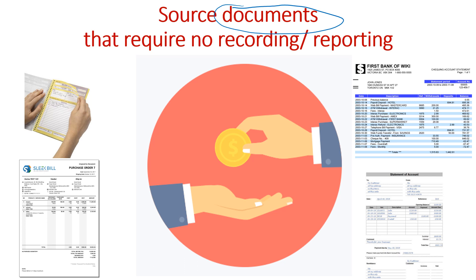What triggers the need to record or report source documents into a journal? Basically, whether a transaction has occurred. A transaction is where there's an exchange between two entities. That exchange might be a cash exchange where the buyer has handed over cash to the seller, or goods — where the supplier has provided the goods to the customer. That would necessitate the recording of transactions.